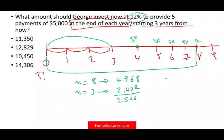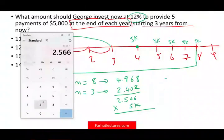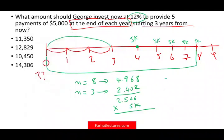The factor is 2.566. I multiply by $5,000 and get $12,830. Due to rounding, it comes out to $12,829, but that's the answer.